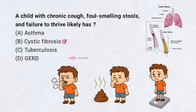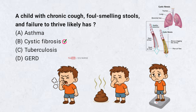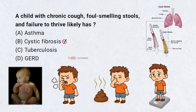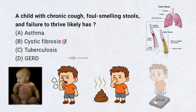This triad of symptoms — cough, foul-smelling stools, and poor growth — is classic for cystic fibrosis. Newborn screening now detects most cases early. The chronic cough suggests recurrent lung infections due to thick mucus buildup. Foul-smelling stools, that is steatorrhea, occur because pancreatic enzymes can't reach the gut to digest fats. Failure to thrive results from both poor nutrient absorption and increased calorie needs from lung disease.